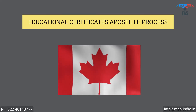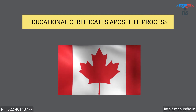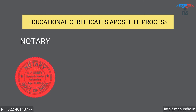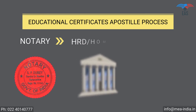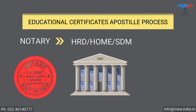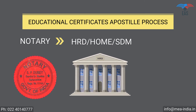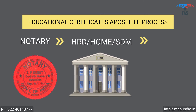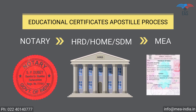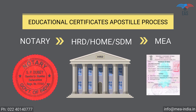Educational Certificate Apostille Procedure for Canada. Step 1: Notary Attestation or Verification Stamp from University. Step 2: Attestation from the HRD Department, Home Department, or SDM. Step 3: Final Attestation from the Ministry of External Affairs, MEA India.